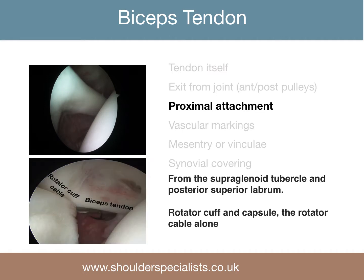In terms of the proximal attachment, the biceps usually arises from the superior glenoid tubercle and the posterior superior labrum. However, the biceps tendon occasionally arises from the rotator cuff and capsule, and rarely from the rotator cable alone.